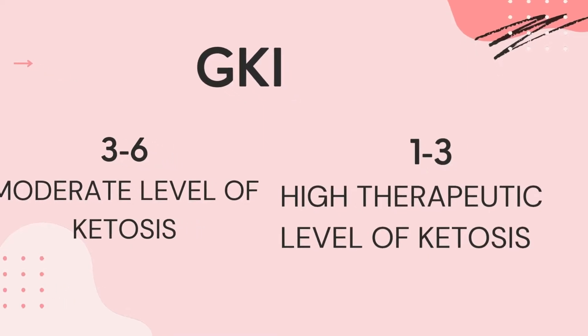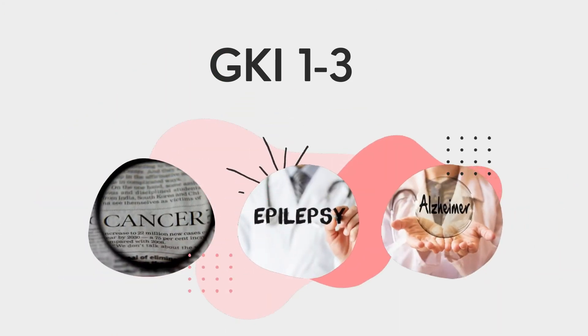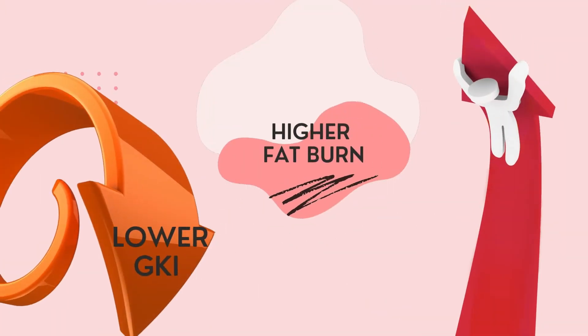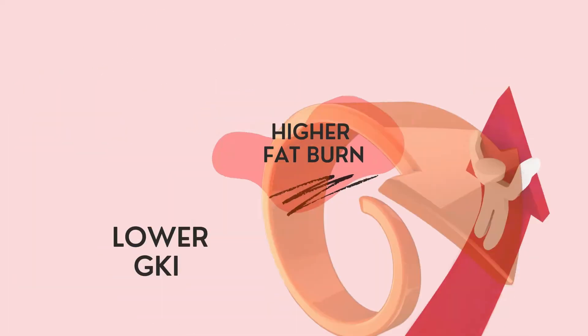If you manage to get your GKI between 1 and 3, you're in a high therapeutic level of ketosis. This is ideal for those using keto therapeutically for the treatment of diseases such as cancer, epilepsy, Alzheimer's disease, Parkinson's disease, traumatic brain injury, and chronic inflammatory disease. In rare cases — usually done with extended fasting — if you reach a GKI lower than 1, you're at the highest level of ketosis, which is very difficult to achieve without doctor supervision. These numbers are taken from Keto Mojo, and it is easy to understand that the lower your GKI is, the more fat you are burning.